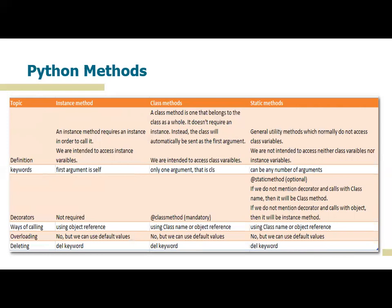Regarding keywords: in instance methods you will always find the first argument as 'self'. In class methods you will have the first argument as 'cls'. Static methods can have any number of arguments and can also be empty.